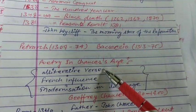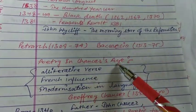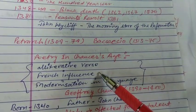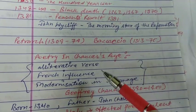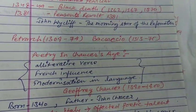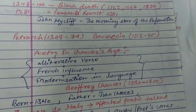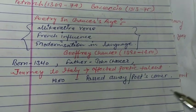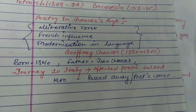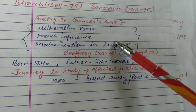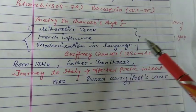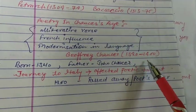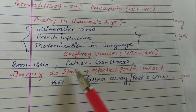The poetry of Chaucer's age had three main characteristics: first, alliterative verse was most common; second, it was heavily influenced by French writers and French works; and third, there was modernization of language. Chaucer's age began the modernization of language, moving from Old English toward improved and eventually Modern English.